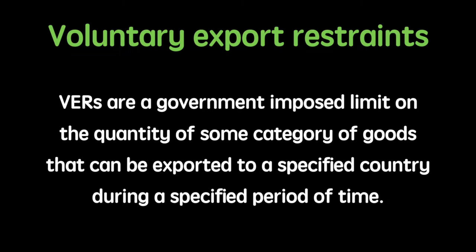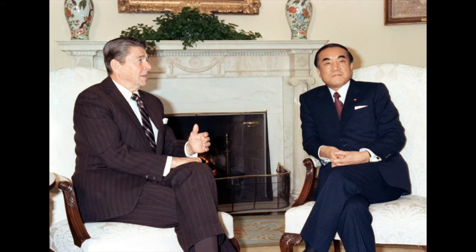Voluntary export restraints, or VERs, are a government-imposed limit on the quantity of some category of goods that can be exported to a specified country during a specified period of time. Quoting Daniel K. Benjamin in his article on voluntary export restraints on automobiles: in May 1981, with the American auto industry mired in recession, Japanese carmakers agreed to limit exports of passenger cars to the United States.